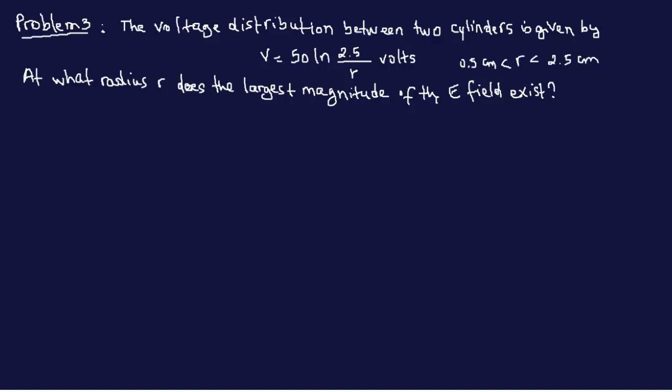Let's move on to the third problem for today. The question here: the voltage distribution between two cylinders is given by V equals 50 ln of 2.5 over R, where R varies between 0.5 centimeters to 2.5 centimeters. The question here is at what radius R between the cylinders does the largest magnitude of the E field exist?